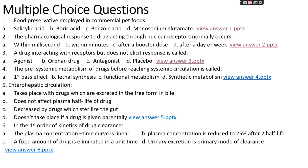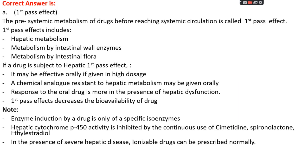Question number four: the pre-systemic metabolism of a drug before reaching systemic circulation is called — option A: first pass effect, option B: lethal synthesis, option C: functional metabolism, or option D: synthetic metabolism. The right answer is option A, first pass effect.